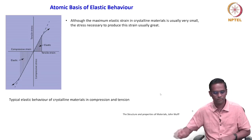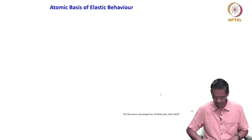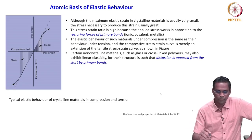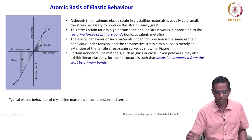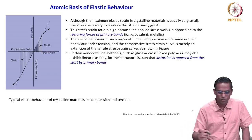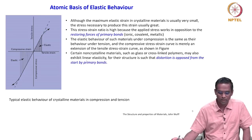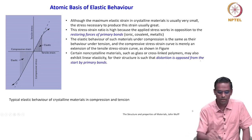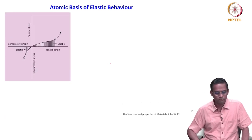This is the kind of stress-strain behavior we have seen and we have come to a conclusion that the stress-strain ratio is high because the applied stress works in opposition to the restoring force of primary bonds, for example ionic, covalent, and metallic bonds. We also started our discussion on non-crystalline materials such as glass; cross-linked polymers may also exhibit linear elasticity because their structure is such that distortion is opposed from the start by primary bonds.